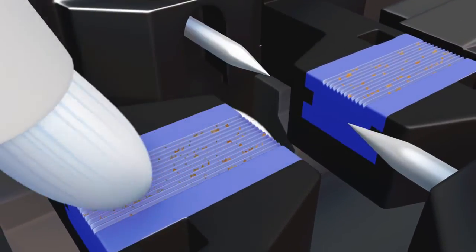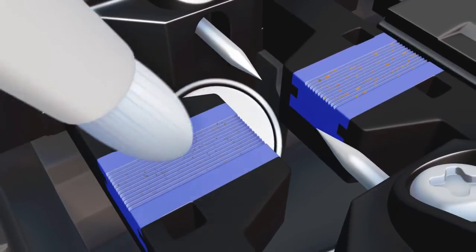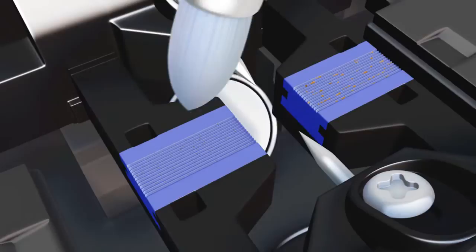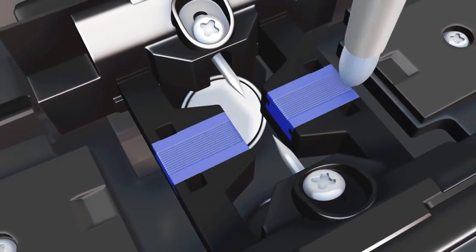Using the scrubber brush, start at the edge closest to the electrodes and move to the outside. Inspect and repeat scrubber brush cleaning if heavy debris is still present.